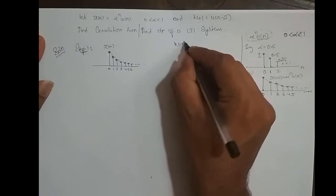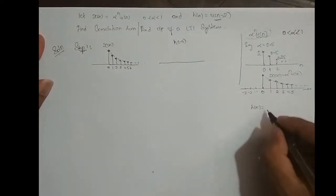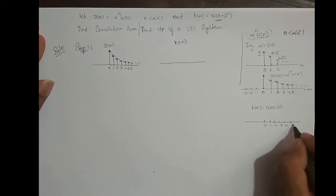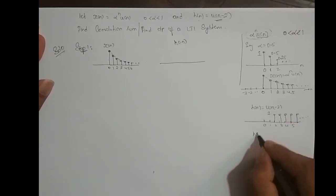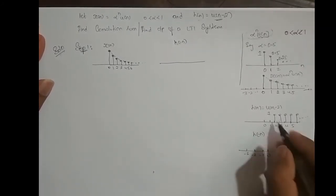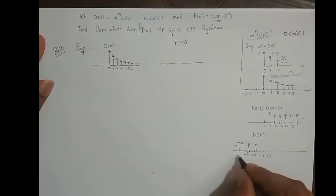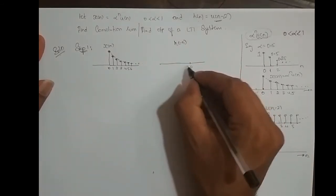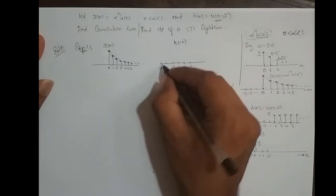Now, what about h(-n)? h(n) is u(n-2), which is u(n) shifted right by 2. To get h(-n), we take the mirror image of h(n). So this sequence starts from -2, -3, -4, and goes on till minus infinity, with amplitude 1. So this is h(-n), starting at -2 with amplitude 1.